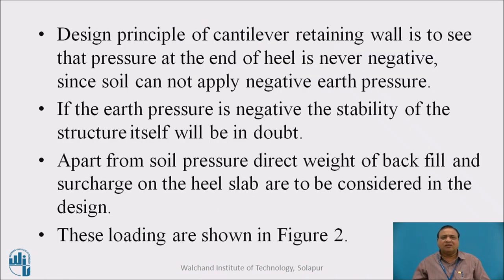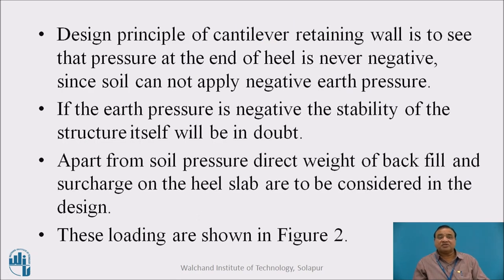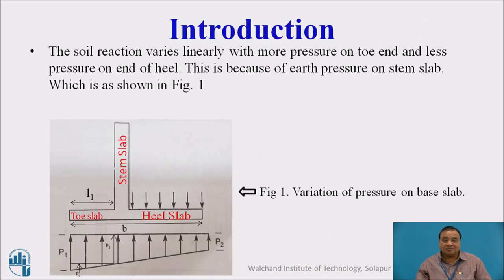The basic design principle of cantilever retaining wall is to see that the pressure at the end of the heel slab is never negative, since soil cannot apply negative earth pressure. The retaining wall should not leave the soil, it should remain with the founding soil. This reaction P2 can be 0 but cannot be negative. If it is negative then it will get lifted up. If the earth pressure is negative, the stability of the structure itself is in doubt. Therefore, the minimum pressure P2 should be either 0 or greater than 0.